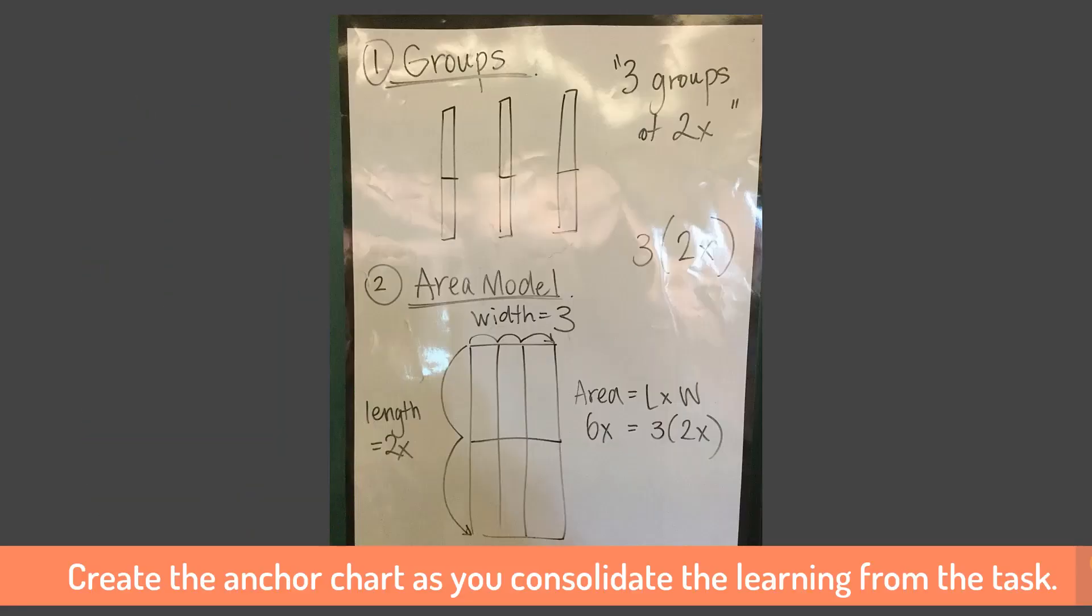And we're going to put that on an anchor chart for students, and we want to make it really clear here that our width is 1, 2, 3 small jumps, and our length is 1x, 2x's, 2 large jumps. And we want to make that really, really clear for our students.